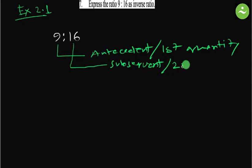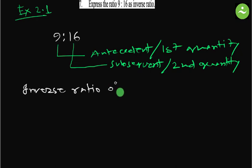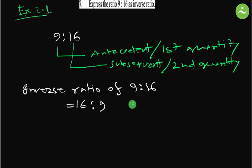You can call it the second quantity. When we have to find out the inverse ratio of a ratio, this is so easy. We just have to interchange the antecedent and subsequent — bring the first quantity to second place and take the second quantity to first place. That is it. So the inverse ratio of 9 is to 16 equals to 16 is to 9. We just interchanged the numbers. That is the answer.